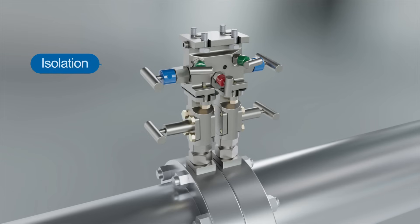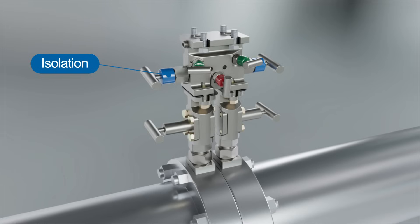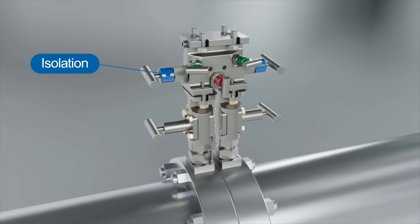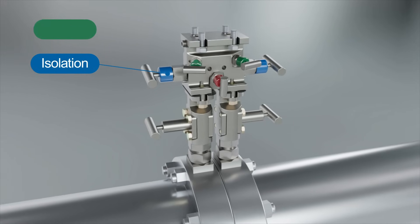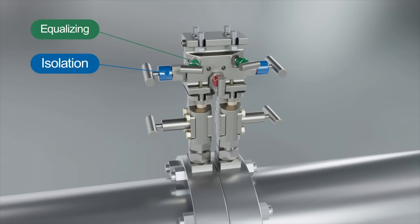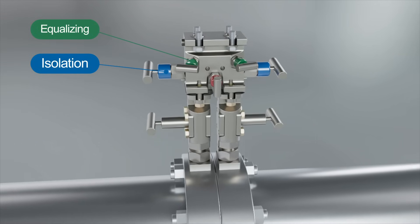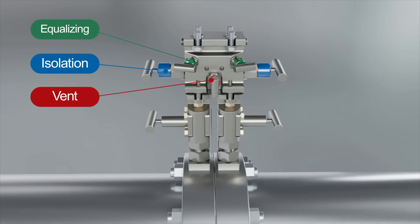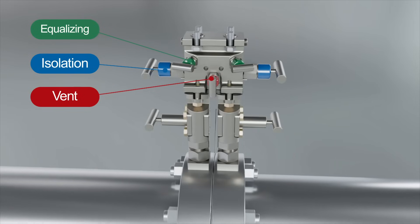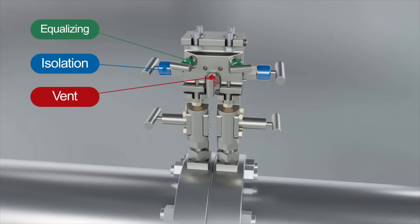The five valve manifold serves as a secondary isolation valve for both upstream and downstream pressures. It also contains redundant equalizing valves for zero calibration checks to the transmitter or flow computer. The integral vent valve allows for venting to relieve any entrapped pressure during maintenance operations.